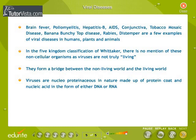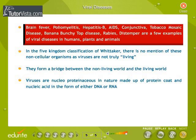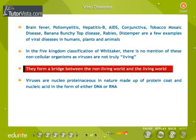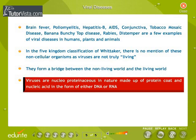Viral Diseases: Brain Fever, Poliomyelitis, Hepatitis B, AIDS, Conjunctivitis, Tobacco Mosaic Disease, Banana Bunchy Top Disease, Rabies, and Distemper are a few examples of viral diseases in human beings, plants, and animals. In the Five Kingdom Classification of Whittaker, there is no mention of these non-cellular organisms, as viruses are not truly living. They form a bridge between the non-living world and the living world. Viruses are nucleoproteinaceous in nature, made up of a protein coat and nucleic acid in the form of either DNA or RNA.